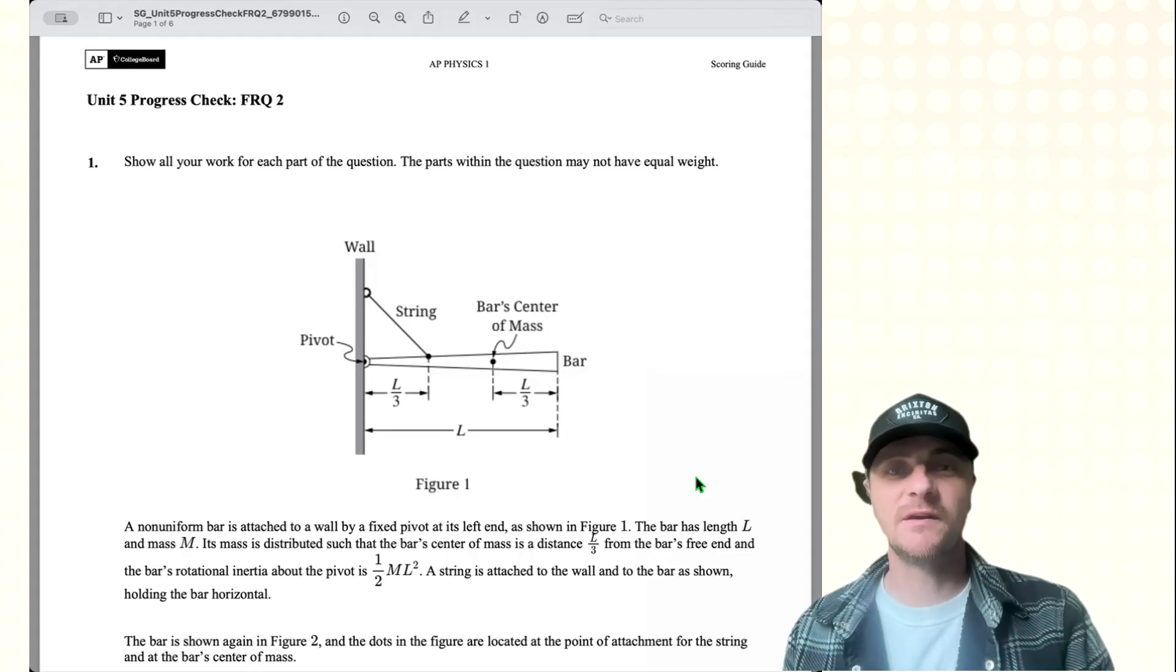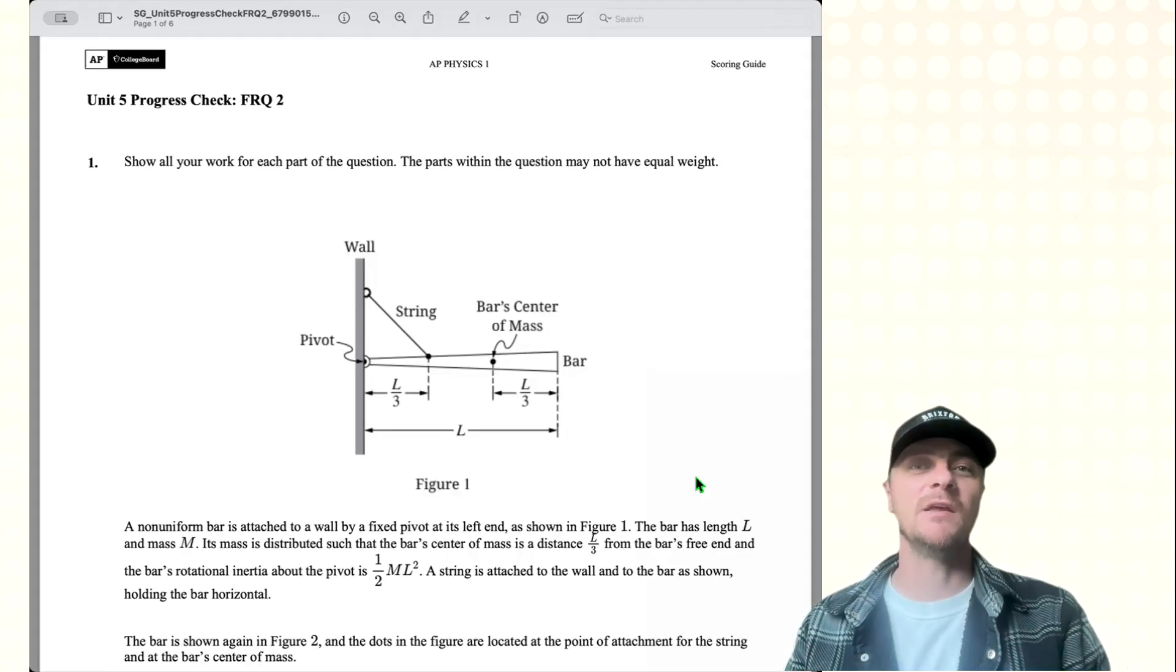AP Physics 1 students, great to see you guys. It's Mr. Heinrich and we're looking at Unit 5 FRQ 2 from the AP Classroom Progress Checks. Let's get into it.